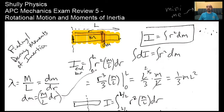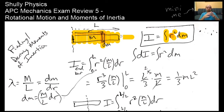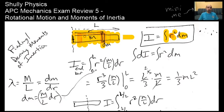What you often have to do is express dm in terms of r, because r changes as you go further out. You do this for a rod using linear mass density. If you look at the rod from the end—the cross-sectional area, like a slice of pepperoni—that doesn't change as you move along the rod. The only thing that matters is how far out each slice is. The further out the slice, the more impact it has on the moment of inertia.